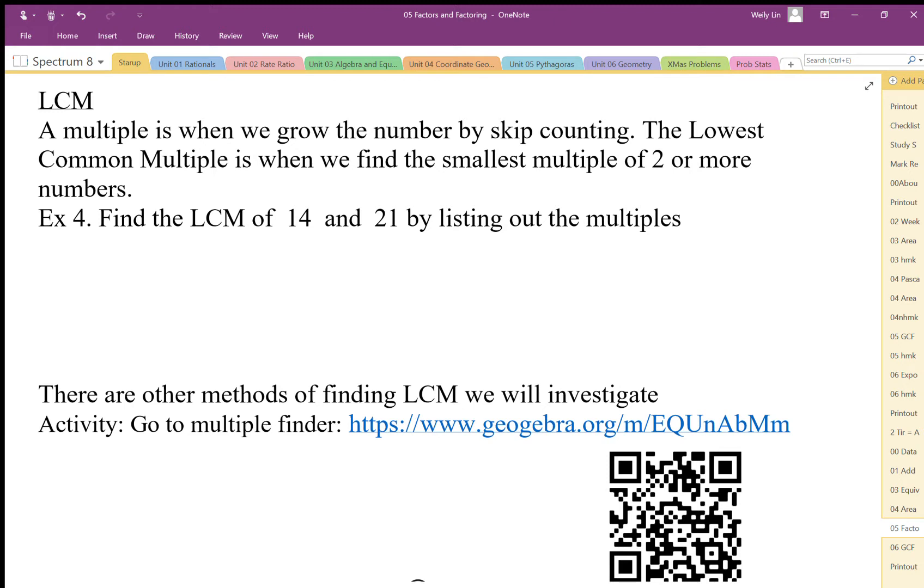LCM is the lowest common multiple or the least common multiple. Multiples are when we grow numbers by multiplication - we want to grow the numbers, whereas factors are breaking the numbers into smaller pieces. We want to find the lowest common multiple of 14 and 21, and one way to do this is listing out the multiples.